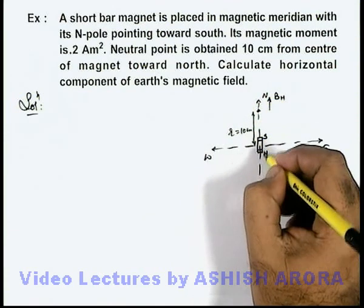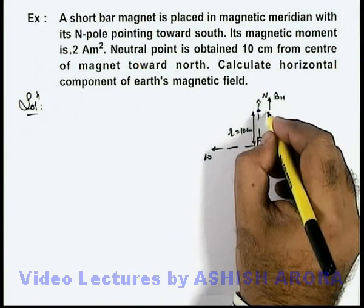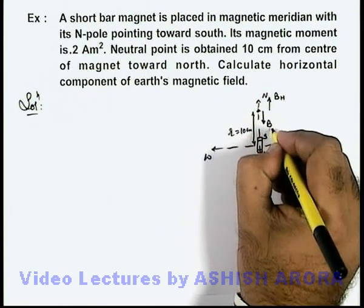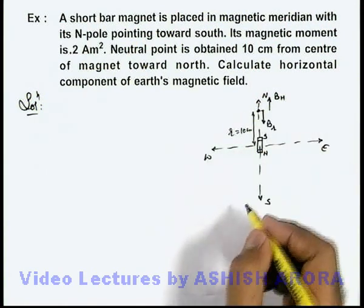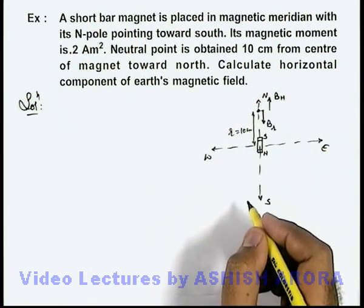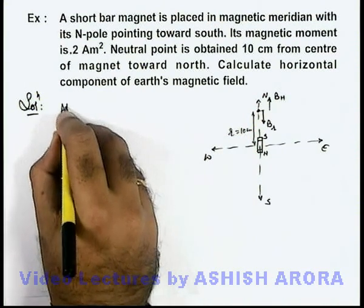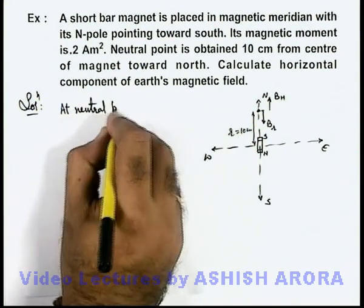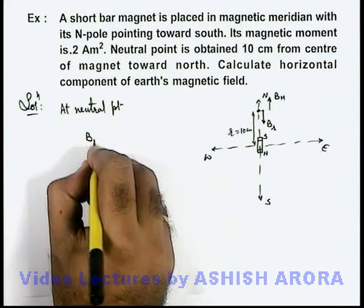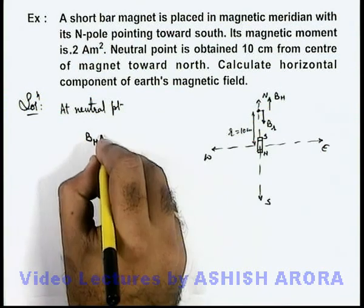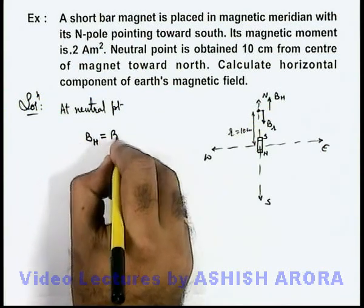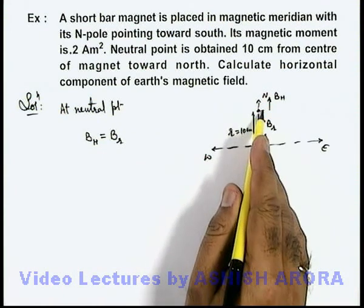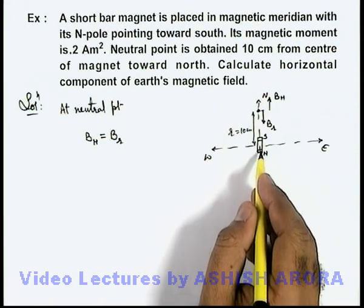Due to this magnet, at this point the magnetic field will be in the radial direction B_r, which will be towards the south pole. At the neutral point, the Earth's horizontal component of magnetic field is balancing the radial magnetic field due to the small bar magnet.